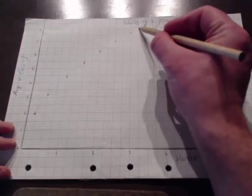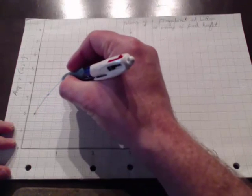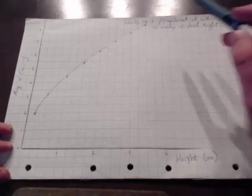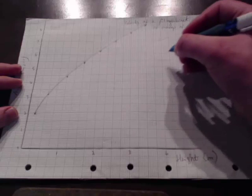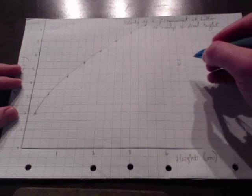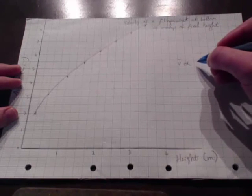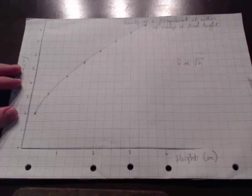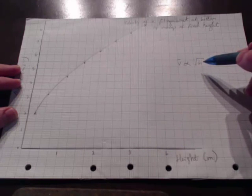And get the approximate shape of that curve. When I'm fairly happy with that, I can go over it in pen. Remembering it's not a join-the-dots exercise — it's just the line showing the trend that's there. So that's my initial graph. And now I can use this to determine the relationship between average velocity and height. The shape of this graph suggests to me that it might be a square root relationship, so average velocity is proportional to the square root of h for height. Now I know that I need to go back to my data and do a bit of processing, and then I'll be ready to draw my linear graph.